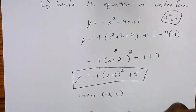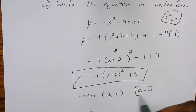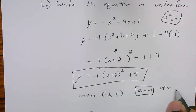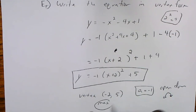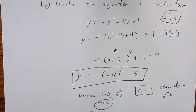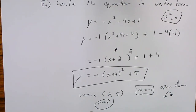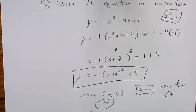So y equals negative 1 times (x plus 2) squared plus 5. Reading this in vertex form, I can see the vertex is (negative 2, positive 5) — you take the opposite of that sign. The a value is negative 1, so the parabola opens downward, meaning the vertex is a maximum. That's the turning point where it goes back downward.